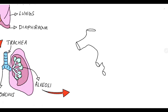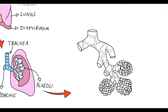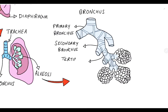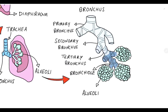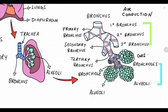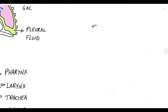The inhaled air passes through the trachea into the bronchus and then into the primary, secondary and tertiary bronchi. Ultimately the air reaches the bronchioles and alveoli where gas exchange occurs. The important point to know is that air conduction occurs in the bronchi, while alveolar gas exchange occurs in the bronchioles and alveoli.